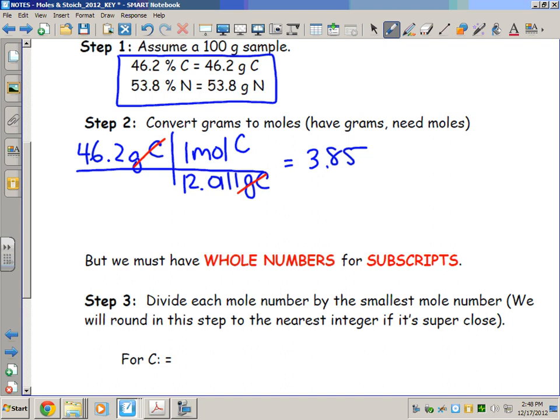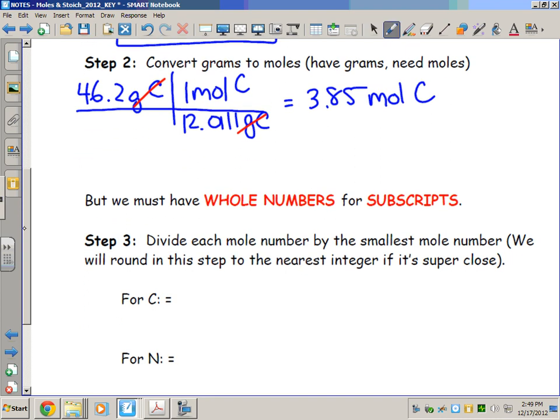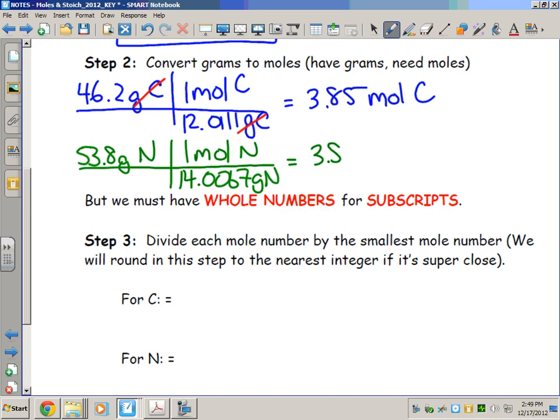If we do the same thing for nitrogen, we have 53.8 grams of nitrogen. Make our grid, we use the GFM - one mole of nitrogen is 14.0067 grams of nitrogen. We do the algebra, and we get 3.84 moles of nitrogen.